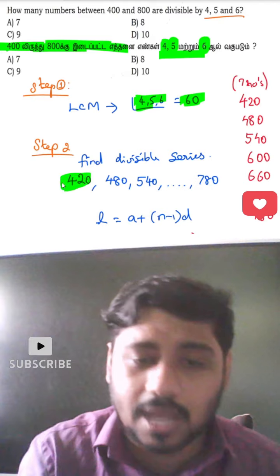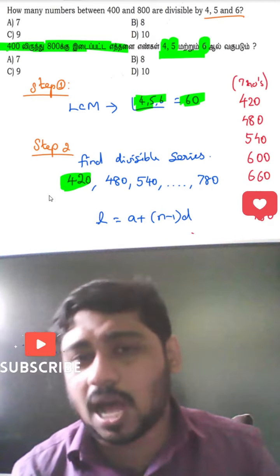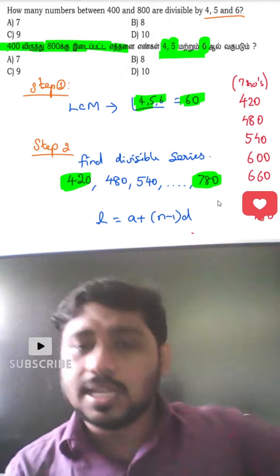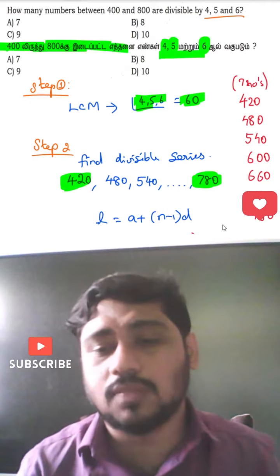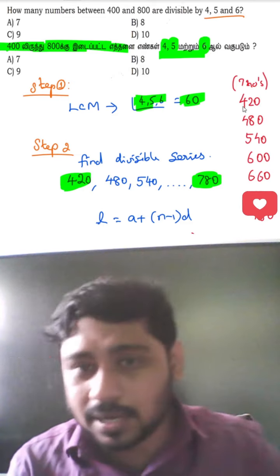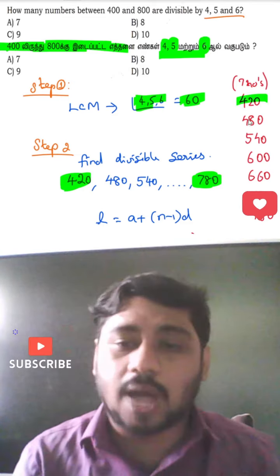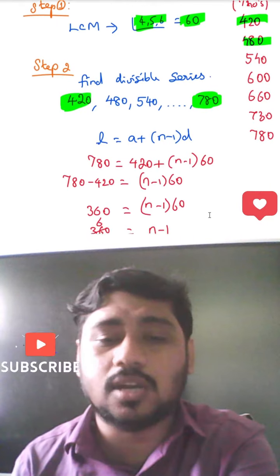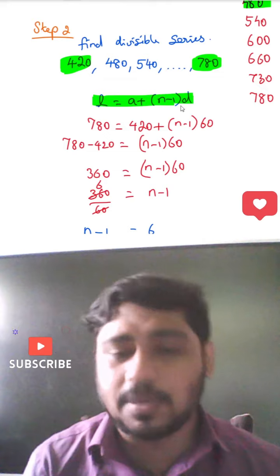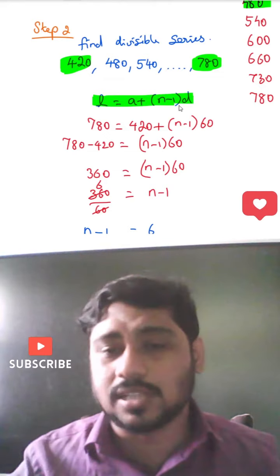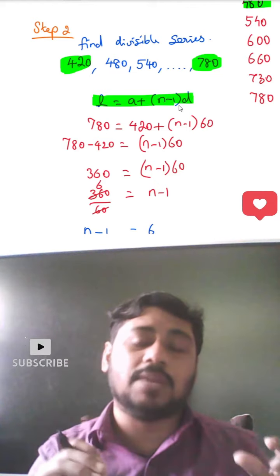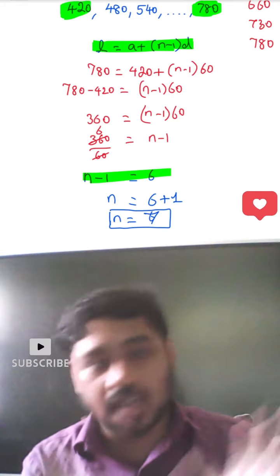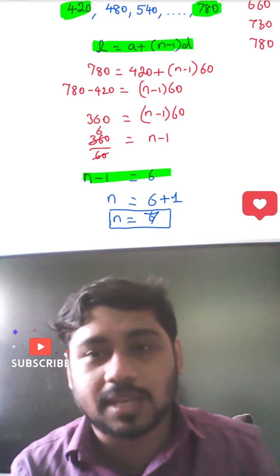The last number is 420 and the last number is 780. How much faster? The last number is 480, 580, and 780. This is 380. The last number is 680, so you can use 680. The next number is 580.